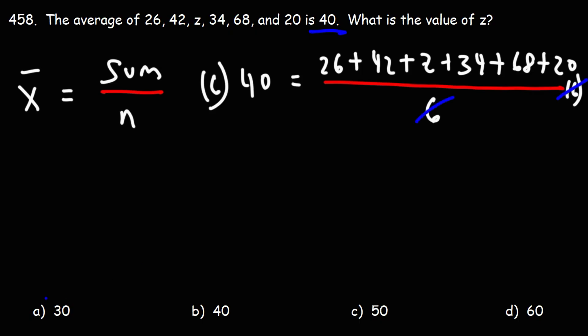Six will cancel on the right. On the left, we have six times 40. Six times four is 24, so six times 40 is 240. You just got to add the zero.